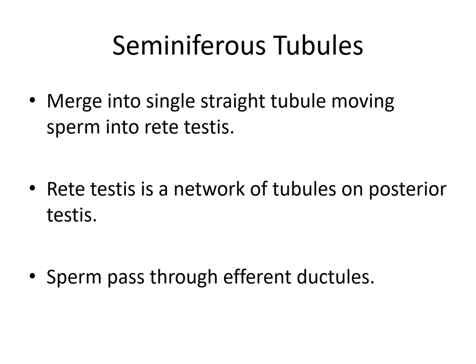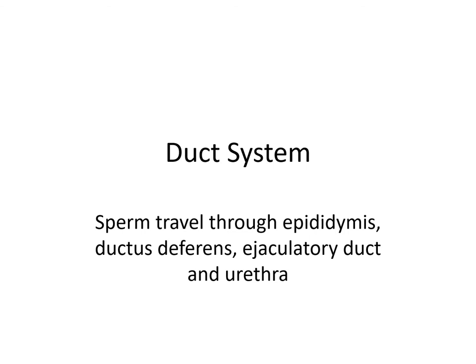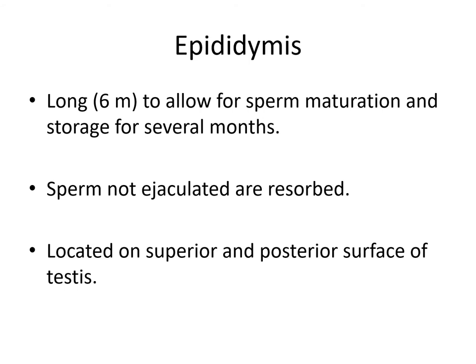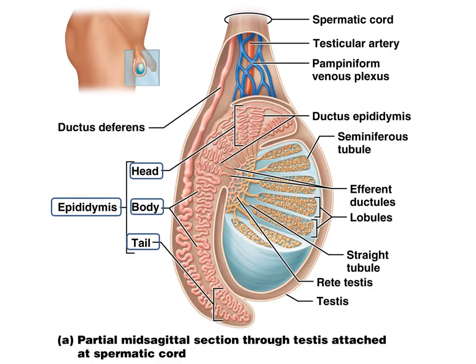The seminiferous tubules merge with a single straight tube moving sperm into a structure called the rete testis. The rete testis is a network of tubules on the posterior testis, and then the sperm passes through the efferent ductules extending toward the epididymis. From the seminiferous tubules, the sperm travels to the epididymis, which is a long tube about six meters that allows sperm to mature and be stored for several months. Any sperm not ejaculated is resorbed. The epididymis is located on the superior posterior surface of the testis.